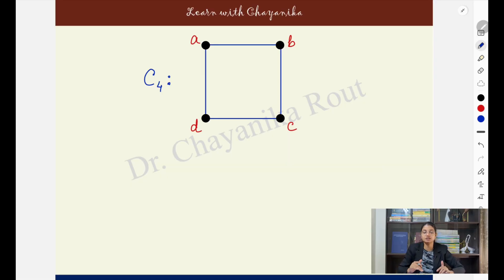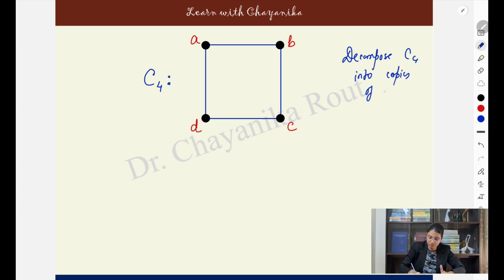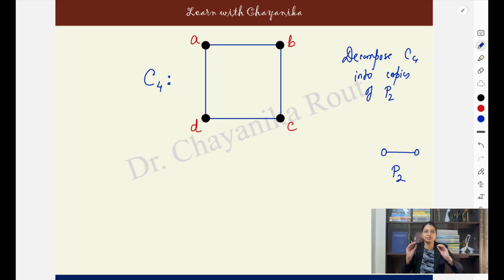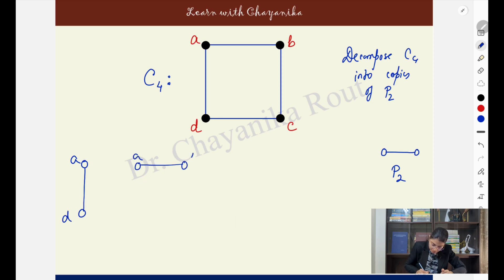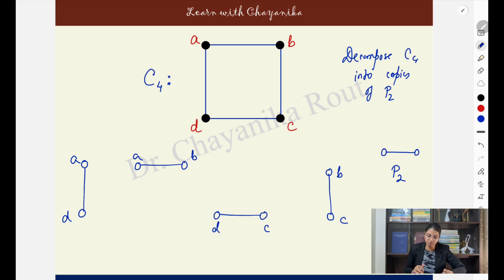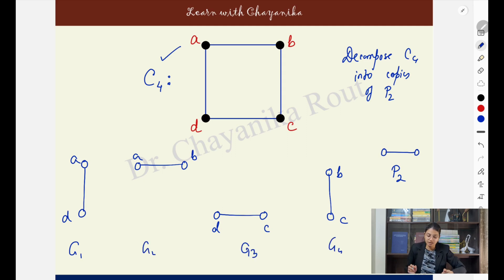For C4, if I ask you to decompose it into copies of P2 — the path on two vertices — I can take AD in one subgraph, AB in another, DC in yet another, and BC in the fourth. Every edge of the graph is appearing and appearing exactly once, and every subgraph created is a P2. So this is decomposition of C4 into copies of P2.